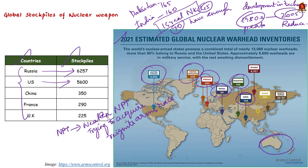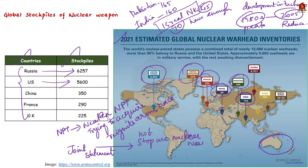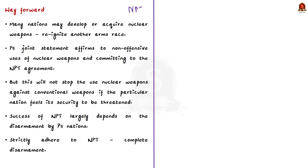The P5's joint statement aims to prevent nuclear war and avoid arms races, emphasizing non-offensive nuclear weapons usage while still agreeing to the NPT. However, this will not stop the use of nuclear weapons against conventional threats if a nation feels its security is threatened. So on one hand they try to achieve nuclear disarmament, and on the other they justify nuclear weaponry.